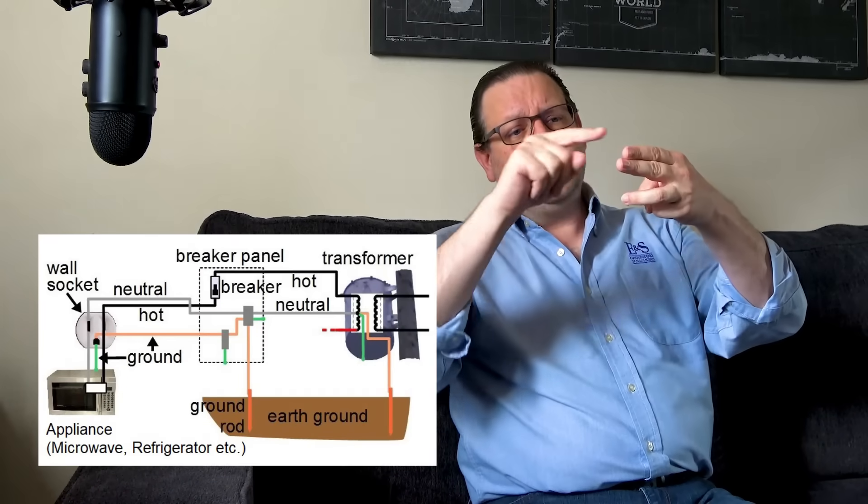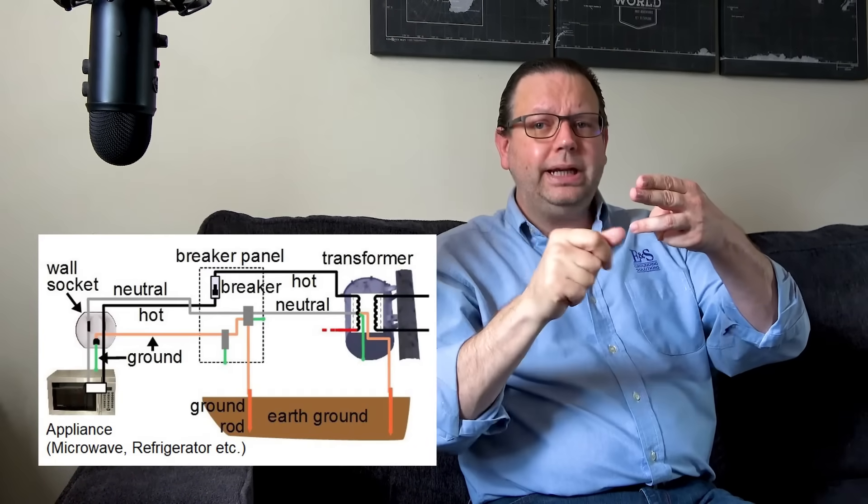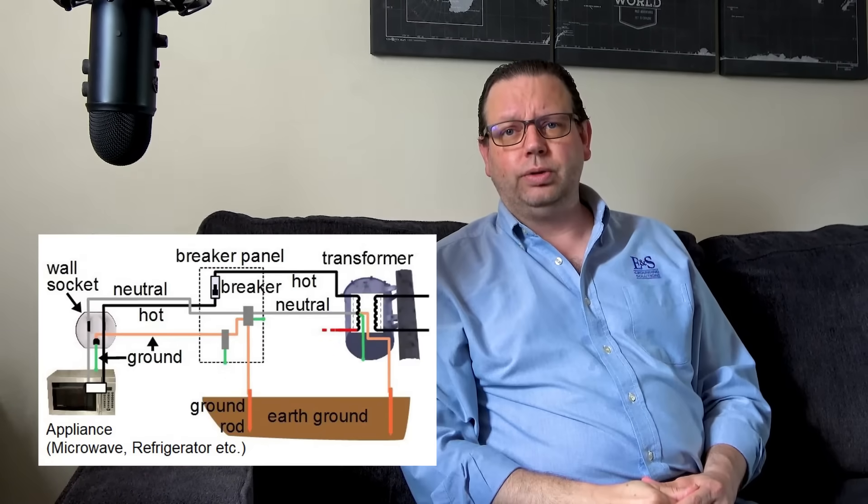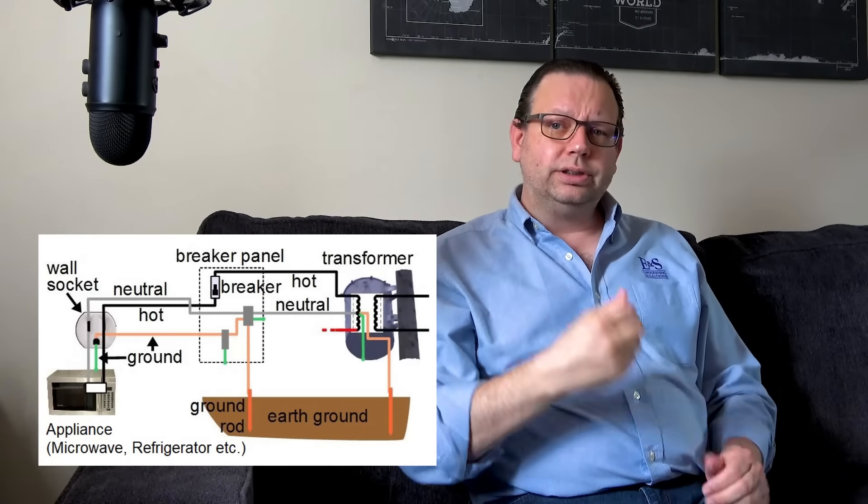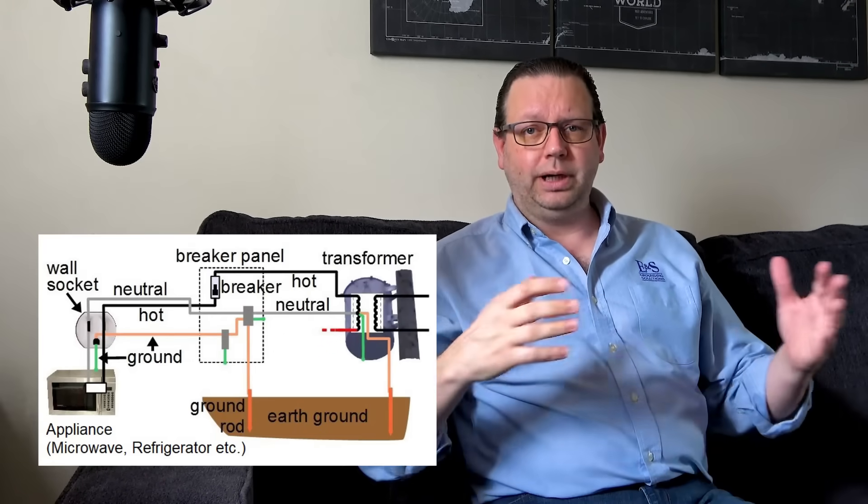If we add that ground wire that's just sitting there waiting just in case, now it's tied to the chassis. If that hot wire touches that case, it immediately travels all the way back to the transformer so that the circuit breaker can operate, causes the circuit breaker to trip instantly without anybody being there. The fraction of a second that the hot wire touches that chassis of your refrigerator, it trips that breaker immediately. That's the purpose of the ground wire.